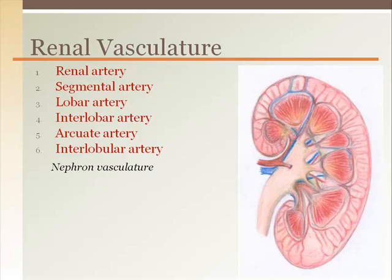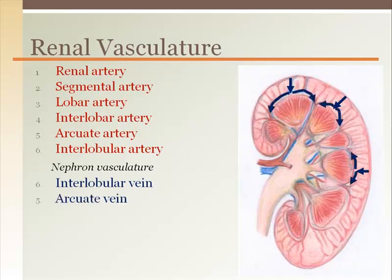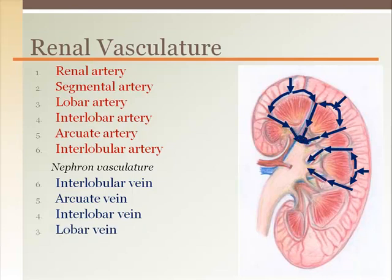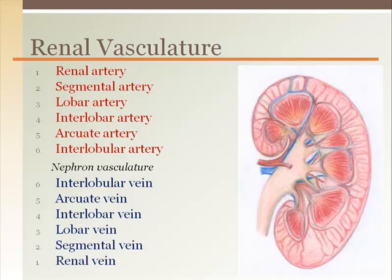After the blood has been filtered, it returns via the interlobular vein in the renal cortex and down to the arcuate vein. The interlobar veins come down between the medullary pyramids to serve the lobar veins, then segmental veins, and finally the renal vein leaving the kidney. Note that some textbooks do not mention lobar or segmental veins.